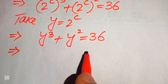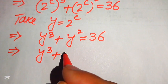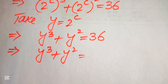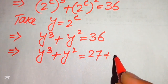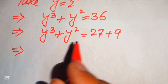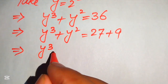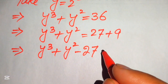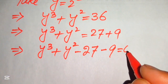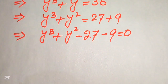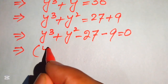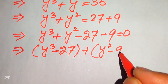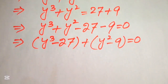We make factors of this equation. We write y cubed plus y squared, and we break 36 as 27 plus 9. Moving both values to the left-hand side, it becomes y cubed plus y squared minus 27 minus 9 equals 0. We pair y cubed with 27 and y squared with 9.